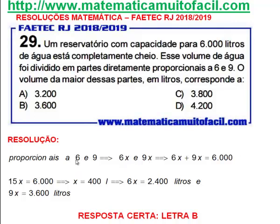Esse aqui vale 6 e esse vale 9. E aí, as demais partes seriam 6x e 9x. Porque eu podia ter 6 vezes 2, 9 vezes 2, 6 vezes 3, 9 vezes 3, e assim por diante. Então, eu chamo genericamente 6x e 9x.